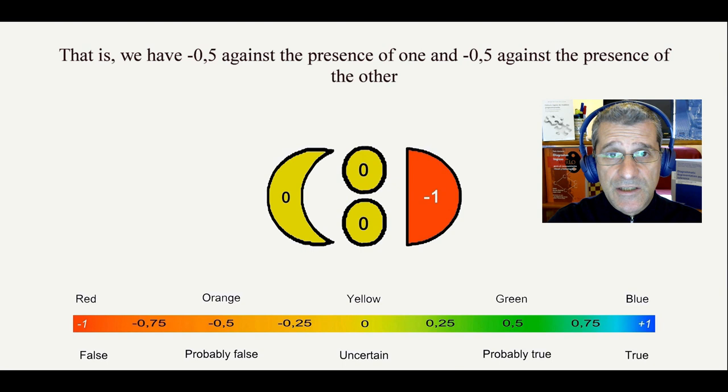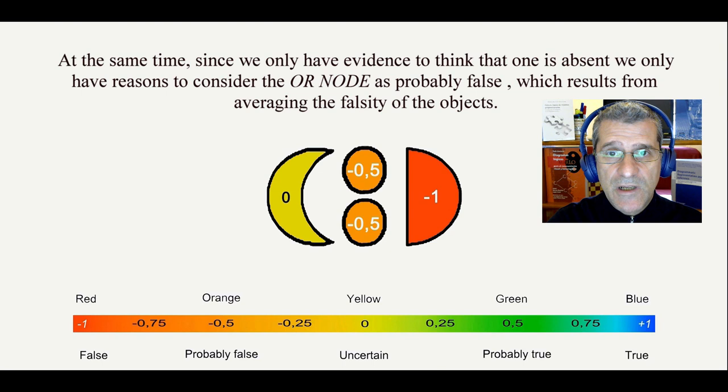At the same time, since we only have evidence to think that one is absent, we only have reason to consider the OR node as probably false, which resolves from averaging the falsity of the objects.